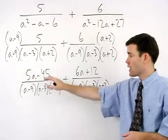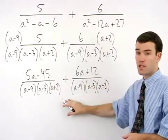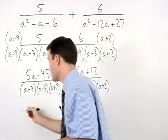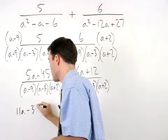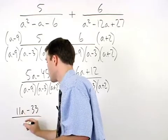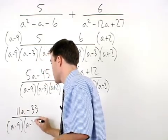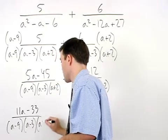Next, add across the numerators to get 11a minus 33 over a minus 9 times a minus 3 times a plus 2.